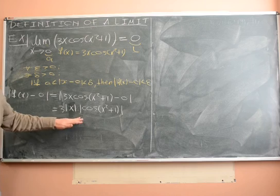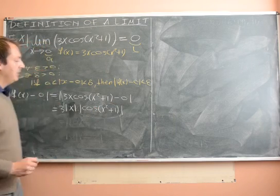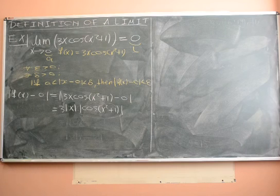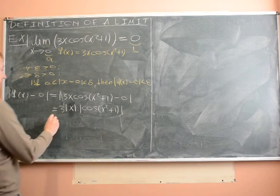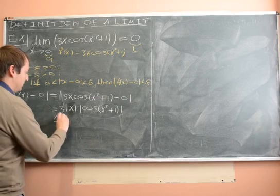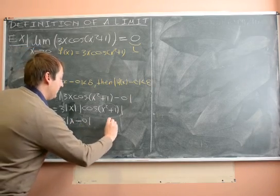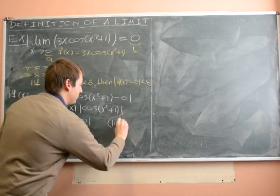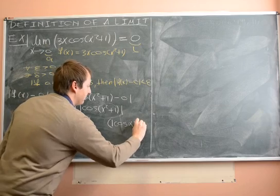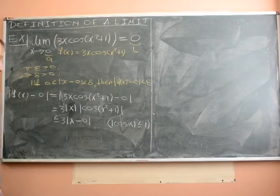Now remember, what do we know about the cosine function? No matter what argument you plug in, cos of that argument will always be between −1 and 1. So the absolute value of cos is less than or equal to 1, which means this is less than or equal to 3 times absolute value of x minus 0, because absolute value of cos(α) is less than or equal to 1 for any argument α.